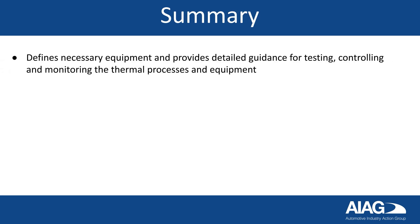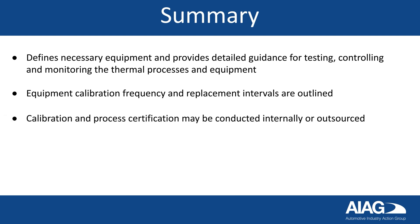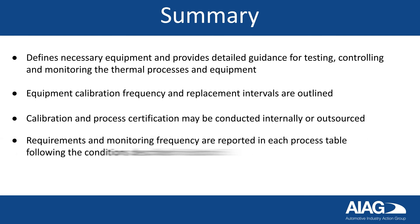This section provides the testing conditions and defines the pass-fail and reporting requirements. In summary, Section 3 defines necessary equipment and provides detailed guidance for testing, controlling, and monitoring the thermal processes and equipment. It outlines equipment calibration frequency and replacement intervals. Calibration and process certification may be conducted internally or outsourced. Requirements on monitoring frequency are reported in each process table following the conditions described in Section 3.